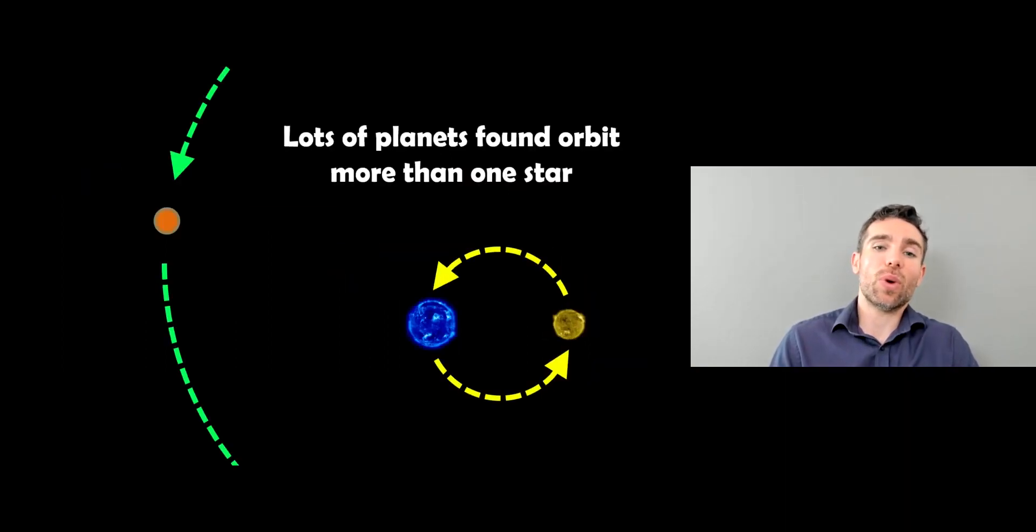We already know that lots of planets orbit more than one star. We've got planets that orbit binary stars, so two stars, and they orbit around the outside, maybe they orbit one of the stars. There's actually quite a lot of planets that orbit more than one star or binary system, so two stars.